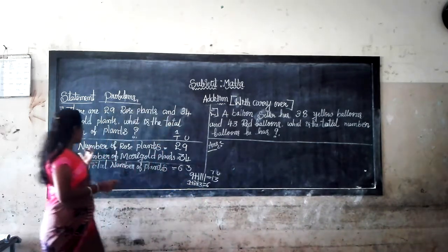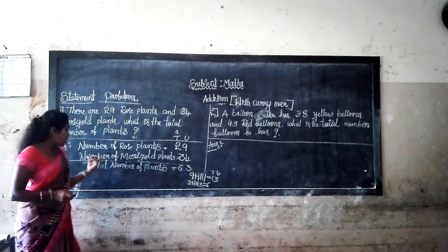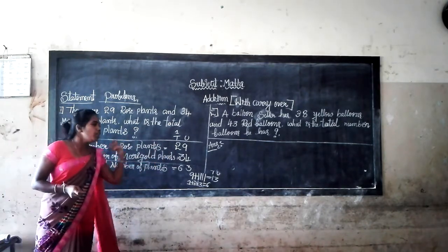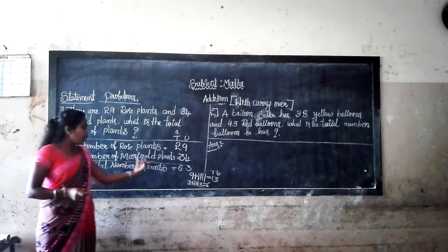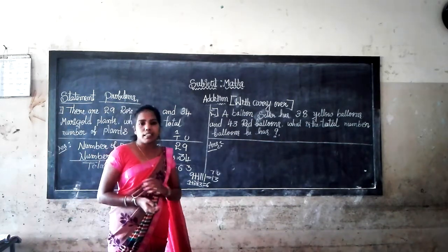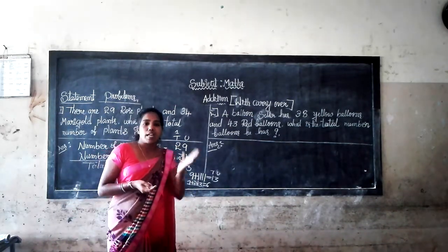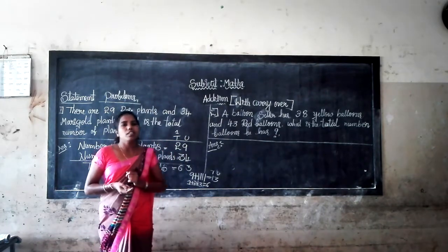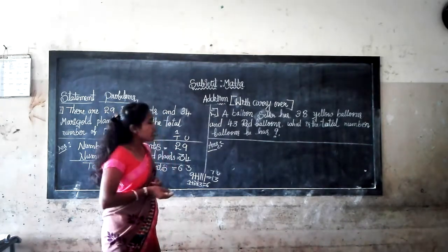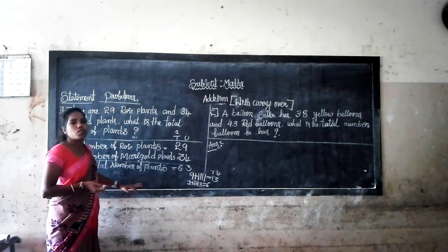Once again: the number of rose plants are 29, the number of marigold plants are 34, total number of plants is 63. In 63, there are 6 tens and 3 units. I hope you understand the concept.